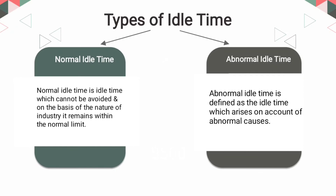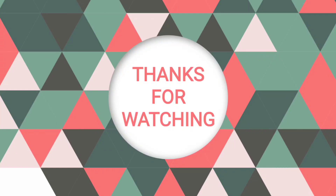Second is abnormal idle time, defined as idle time which arises on account of abnormal causes — for example, strikes, lockouts, floods, major breakdown of machinery, fire breakout, etc. Such idle time is unusual and largely uncontrollable.